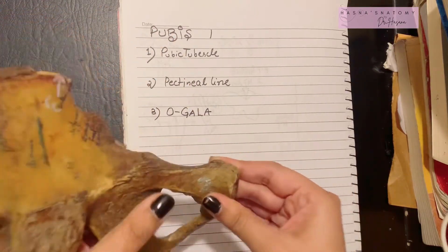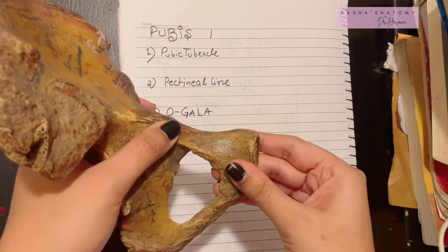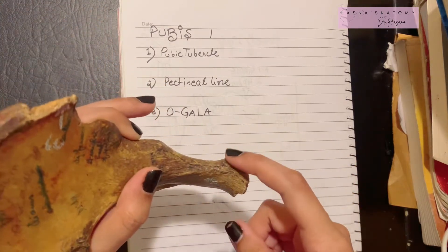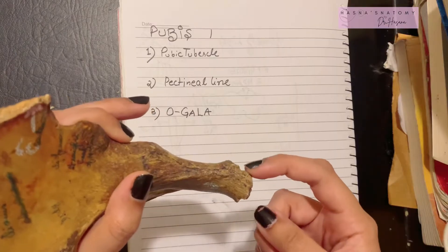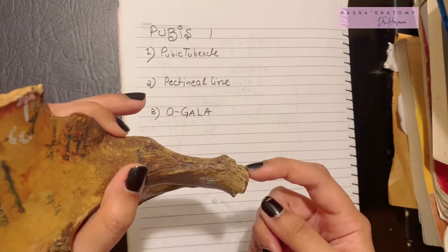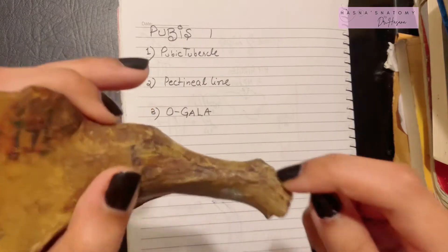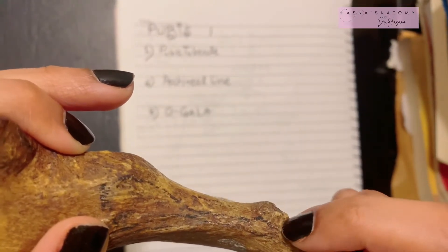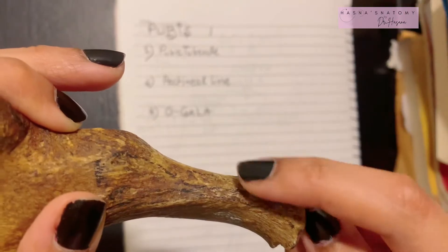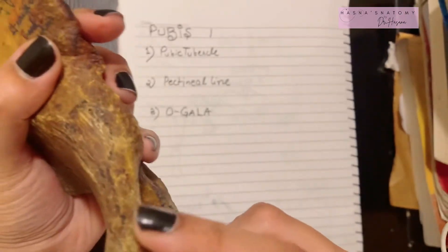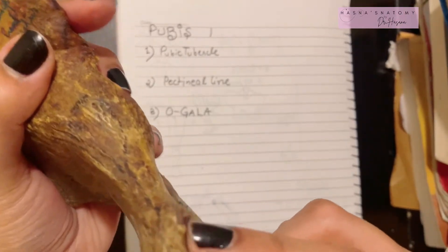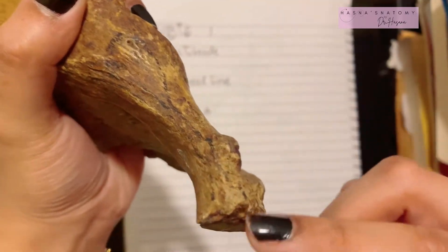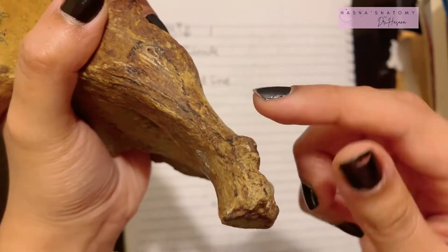Now let's talk about the body of the pubis. The most important feature of the body is that superiorly it presents a pubic crest, which runs from the medial side all the way to the lateral side. At the lateral end of the pubic crest is the pubic tubercle — tubercle meaning any prominence or protruding area.